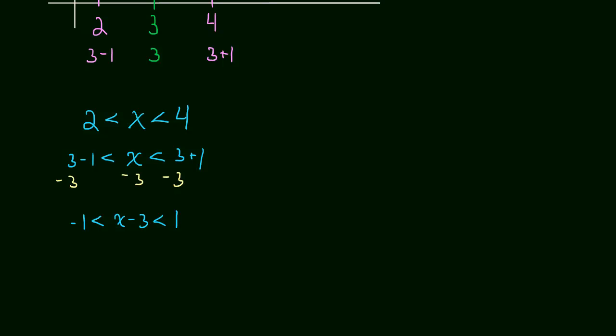And now I can write this as an absolute value. So this is the absolute value of x minus 3 is less than 1. And in the previous version of this video, I went into maybe 3 or 4 minutes explaining why this is equal to this. And I don't think I need to do that. I think you understand that.